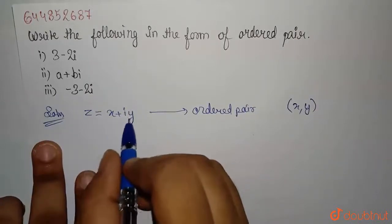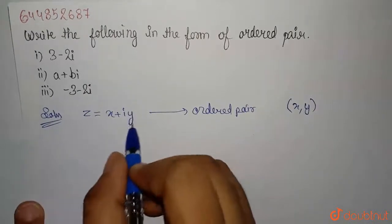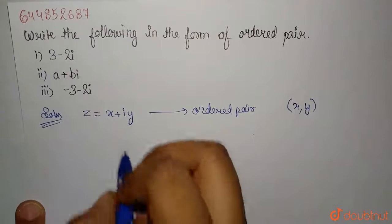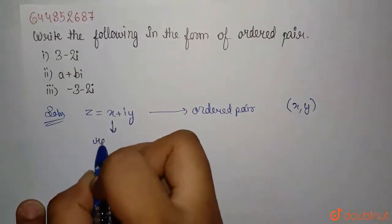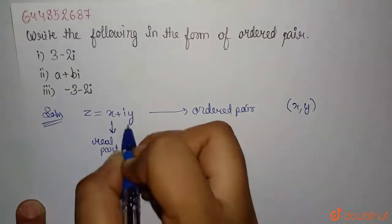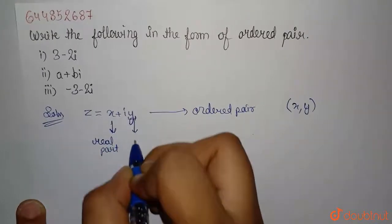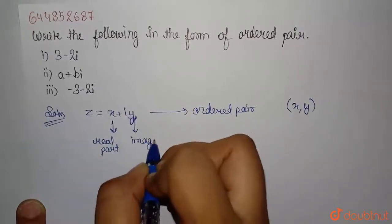Basically, these two terms, here it is coefficient of iota or the imaginary part. This is known as the real part. And this y in particular is known as the imaginary part.